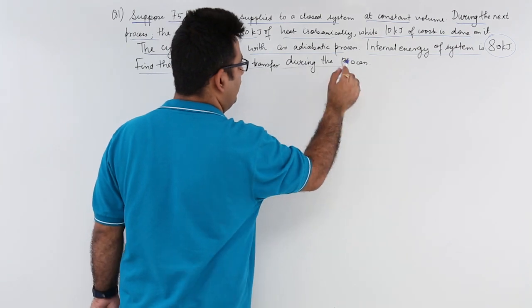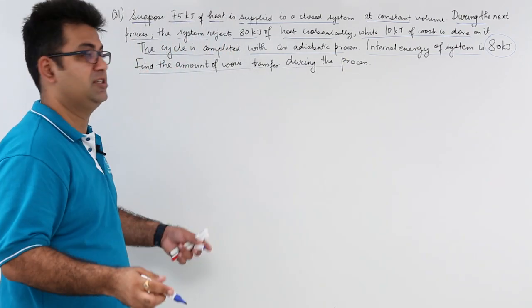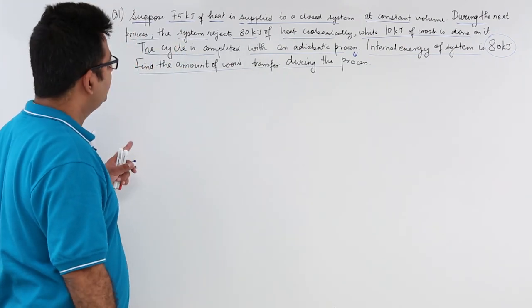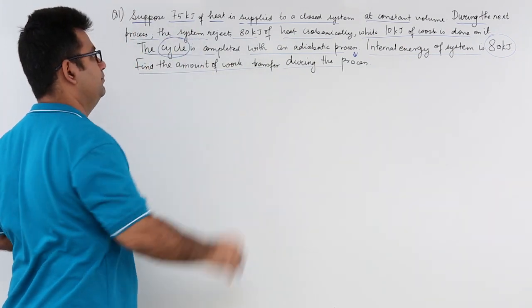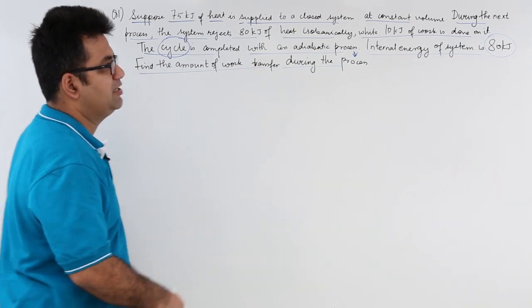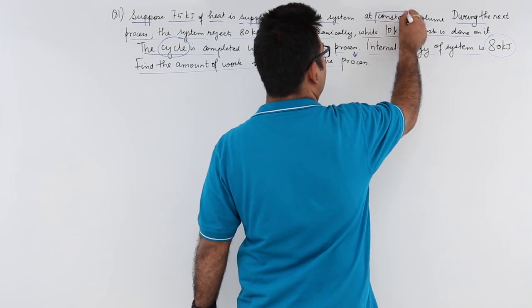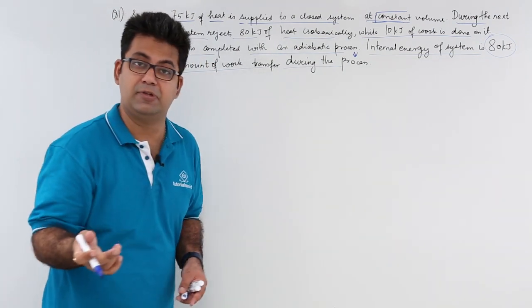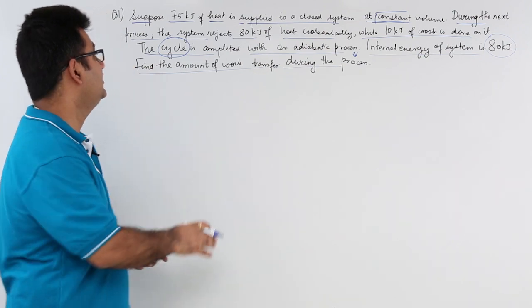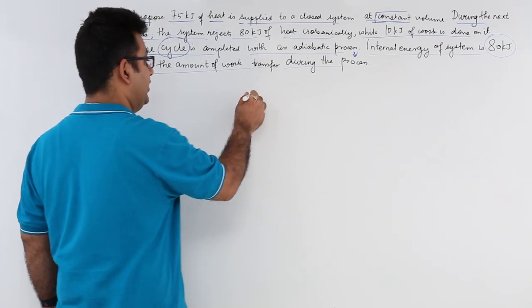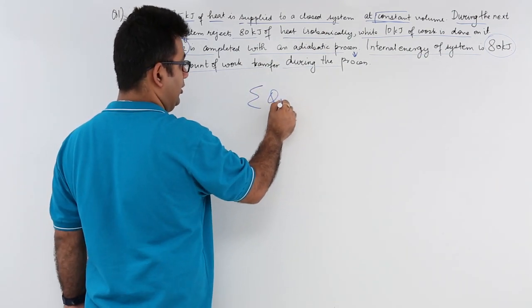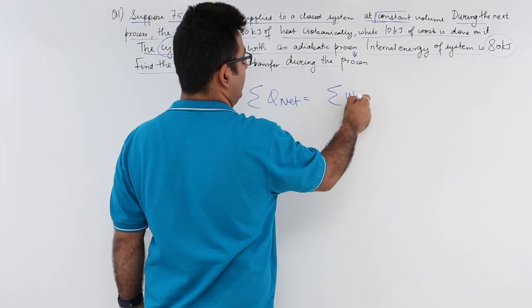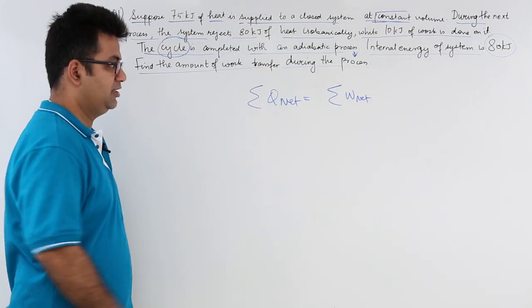Find the amount of work transfer during the adiabatic process. Now if you look at this, this is basically a cycle. Don't get confused by starting to write down relations for constant volume or constant pressure processes. It is a cycle, and for a cycle the total net heat exchange is equal to the total net work exchange.